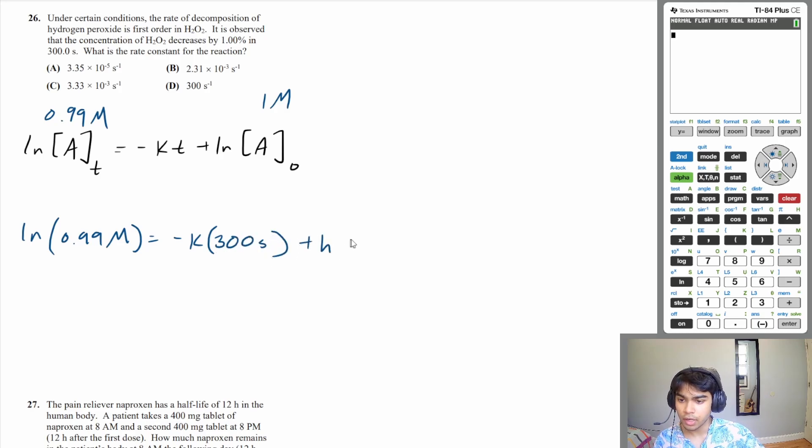And then plus the natural log of the initial concentration, which we're saying is 1 molar. Again, it doesn't matter what numbers you actually use, just as long as the concentration at some time T is 99% of your initial concentration. And so at this point, all you have to do is solve for K. So K is going to be, let's do natural log of 0.99 minus the natural log of 1, which is 0, divided by negative 300 seconds. That is 3.35 times 10 to the negative 5. And the units are per second. And that is answer choice A.